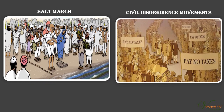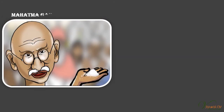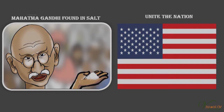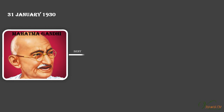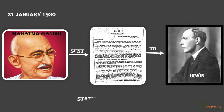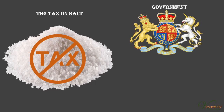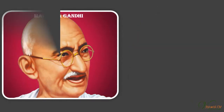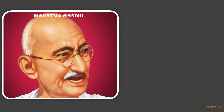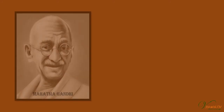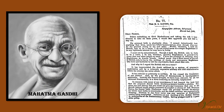Mahatma Gandhi found in salt a powerful symbol that could unite the nation. On 31st January 1930, he sent a letter to Viceroy Irwin stating 11 demands — some of general interest, others specific demands of different classes, from industrialists to peasants. The tax on salt and the government monopoly over its production, Mahatma Gandhi declared, revealed the most oppressive face of British rule. Mahatma Gandhi's letter was, in a way, an ultimatum.